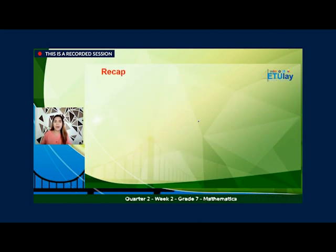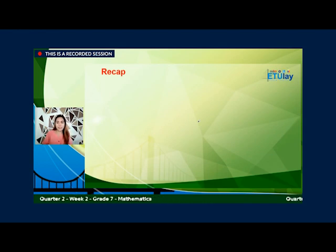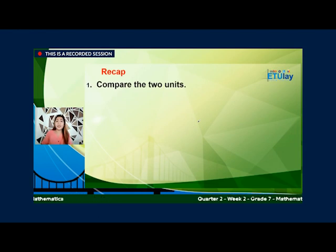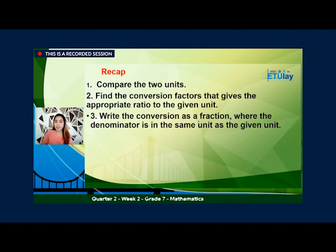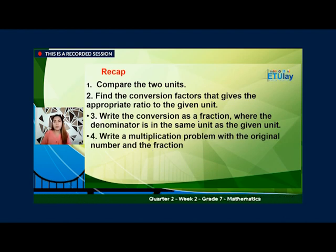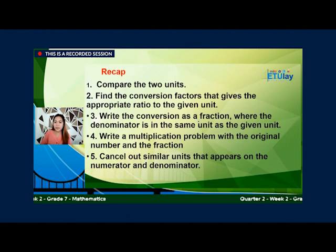Ngayon na alam nyo na kung paano ang pag-convert ng units, alam kong masasagutan na rin nyo ang inyong modules. You can check your answer by referring to page 21 for the answer key. Now let's have a short recap — these are the tips in converting measures: First, compare the two units. Second, find the conversion factors that give the appropriate ratio to the given unit. Third, write the conversion as a fraction where the denominator is in the same unit as the given unit. Fourth, write a multiplication problem with the original number and the fraction. Fifth, cancel out similar units that appear on the numerator and denominator. And lastly, solve.